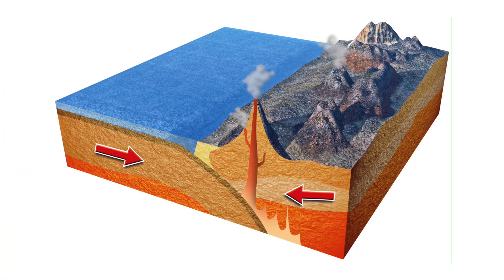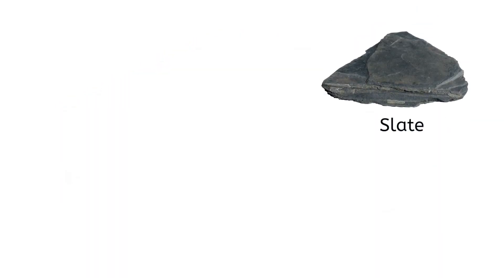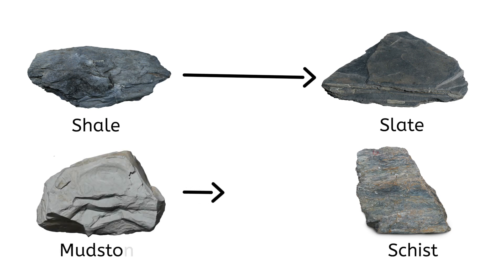Many metamorphic rocks can be found in regions that have experienced significant geological activity, such as subduction zones. The Appalachian Mountains are full of metamorphic rocks because these mountains were formed by the collision of tectonic plates millions of years ago. This collision created the necessary heat and pressure to transform existing rocks into new forms. Other common examples of metamorphic rocks include slate, which forms from shale, and schist, which forms from mudstone. Isn't it fascinating how rocks can transform and tell us so much about Earth's past? Alright Bea, back to you.